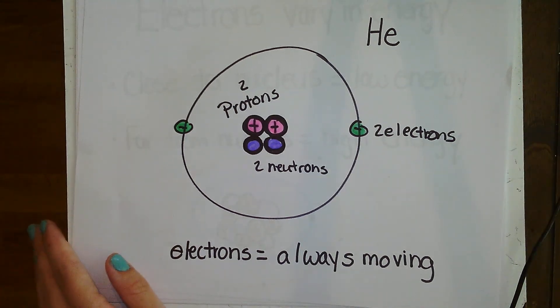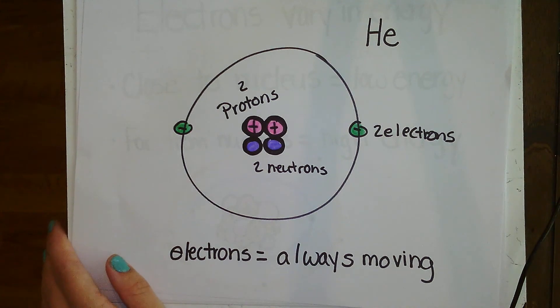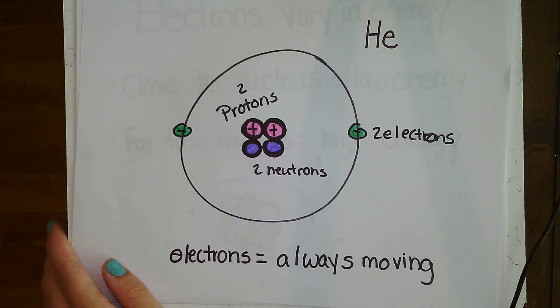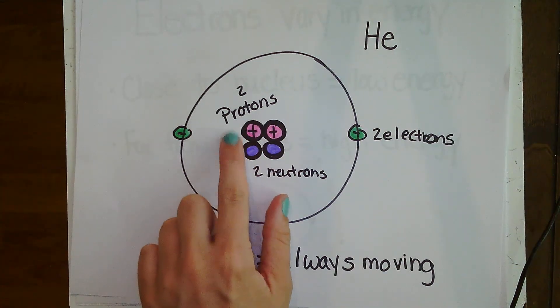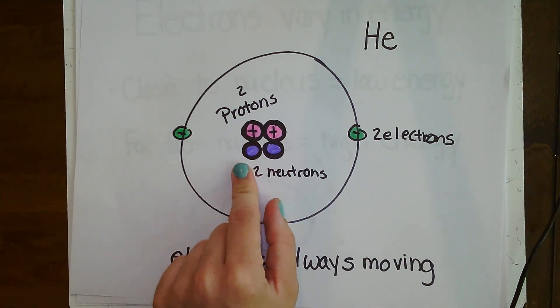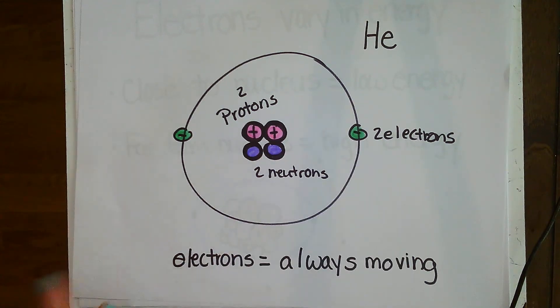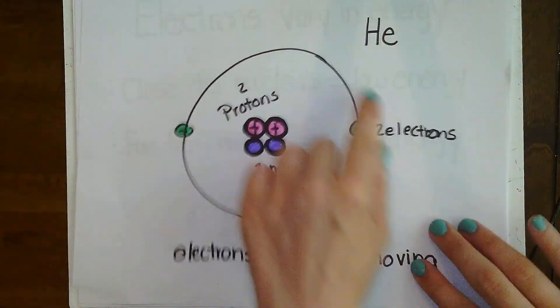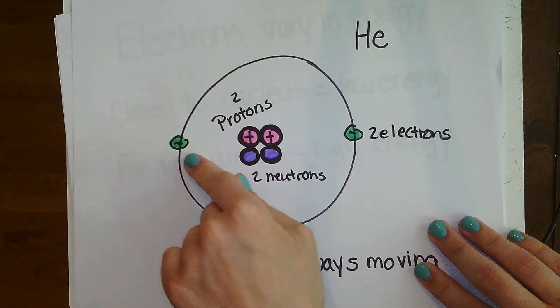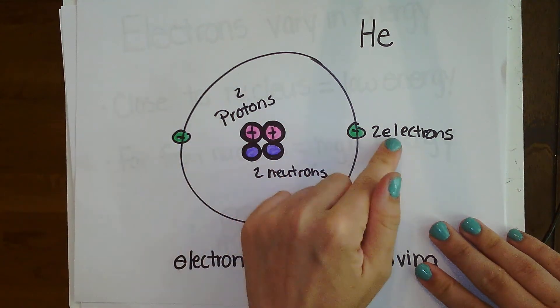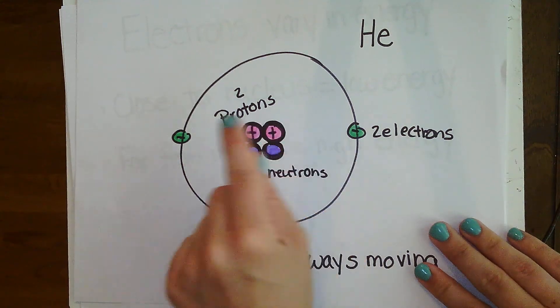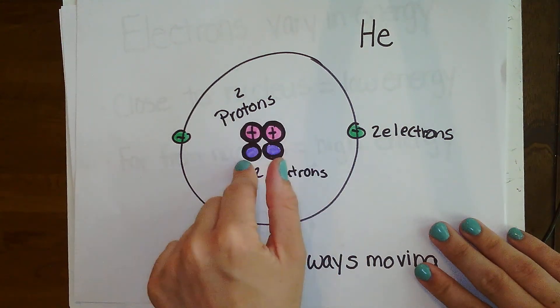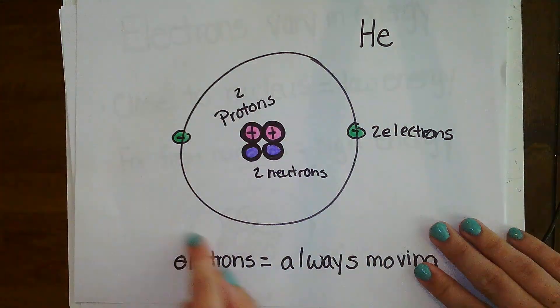We all made our own atoms last cycle, so you should remember this. This is just a very simple reminder of what an atom looks like. Helium, for example, has two protons, which are positive, two neutrons that are neutral, and two electrons. The electrons are always moving, so we can't say at any given moment where the electron is. We're going to talk more about their location in a bit. The protons and the neutrons make up the nucleus, and the electrons move around.